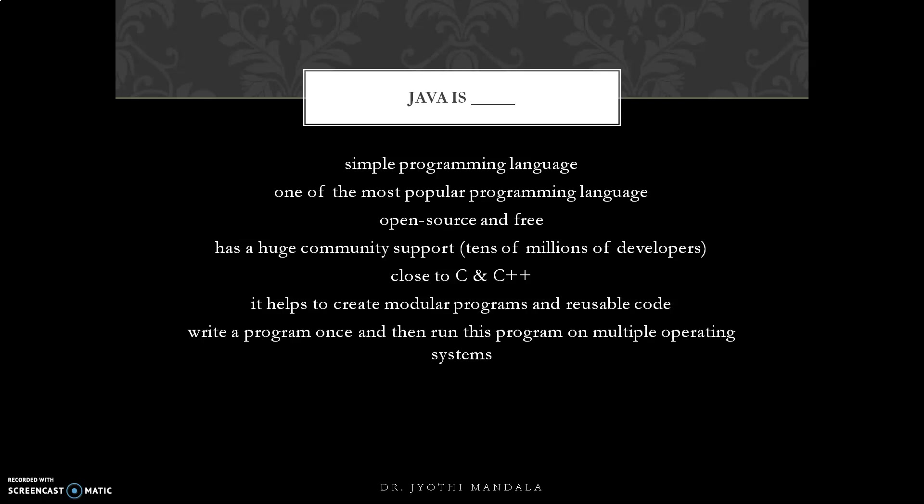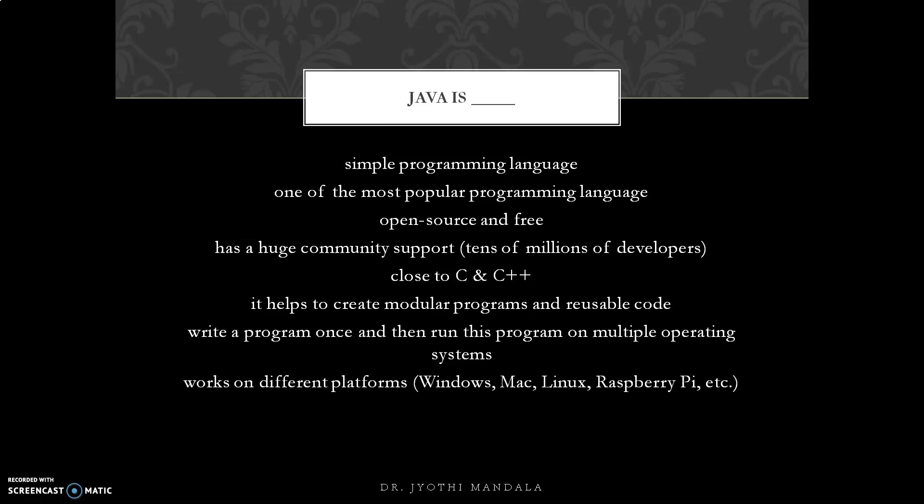Java follows the approach of write a program once and then run the program on multiple operating systems. Once a program is developed in one operating system, the same code can run on different operating systems — it works on different platforms like Windows, Mac, Linux, and more.